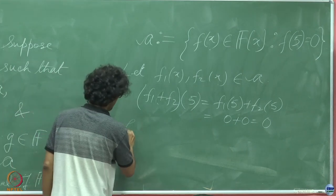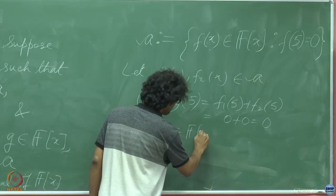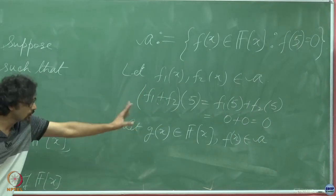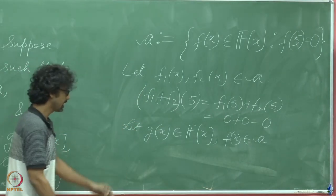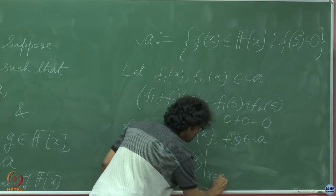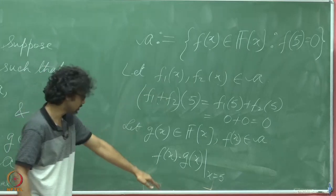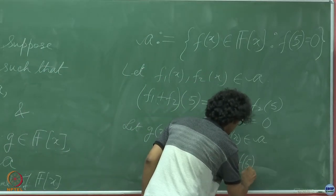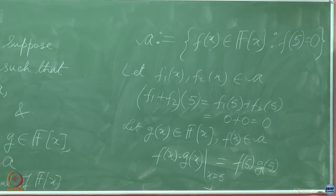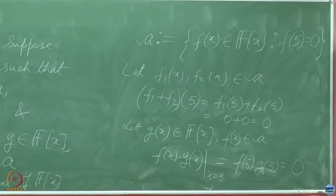Take f_1 and f_2 belonging to this subset. We know f_1 vanishes at 5 and f_2 vanishes at 5. So (f_1 + f_2)(5) = f_1(5) + f_2(5) = 0 + 0 = 0. The first property is verified. For the second property, let g(x) belong to the ring and f(x) belong to this ideal. Then f(x)·g(x) evaluated at x=5 equals f(5)·g(5). Since f(5)=0, this is just 0 regardless of g(5). So this is an example of an ideal.